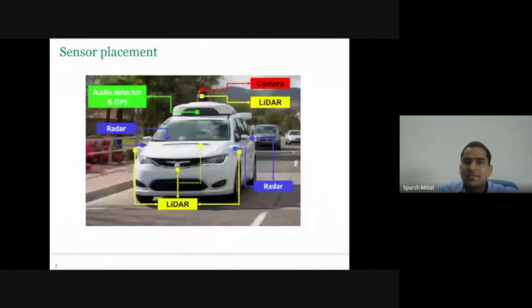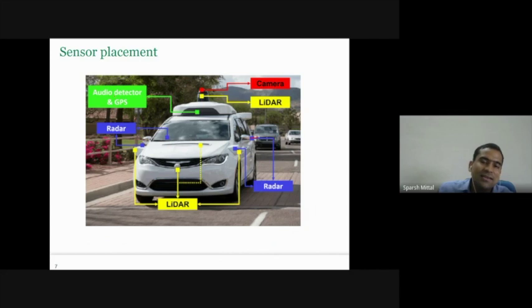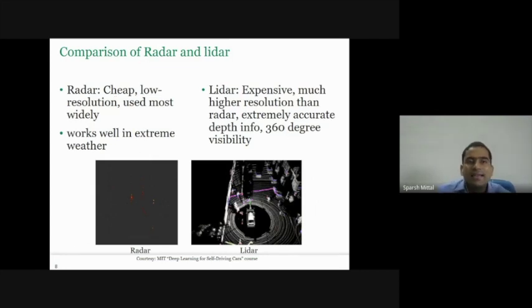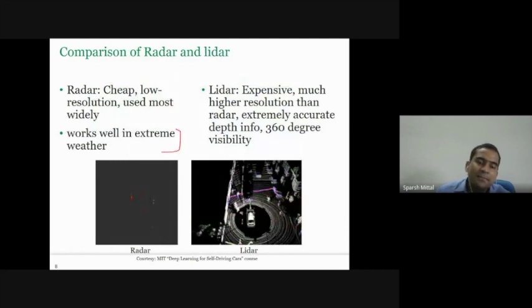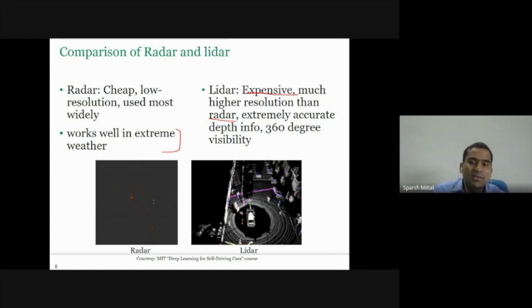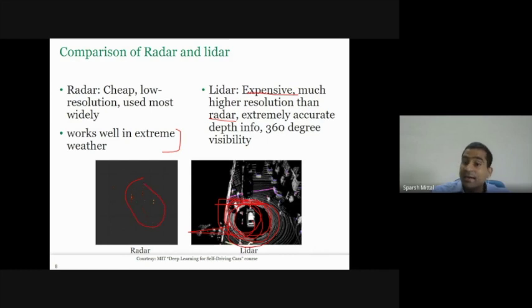Sensor placement includes camera, lidar, and radar. There is also an audio detector because audio signals tell us how close a nearby car is. Radar is cheap, low resolution, widely used, and works well in extreme weather. Lidar is more expensive but provides much higher resolution, is especially good at depth estimation, and gives 360-degree visibility. For the same scene, lidar gives very good depth information — you can see buildings and identify object types clearly.